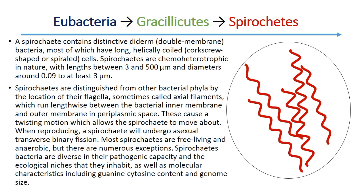You know spirochetes from the previous lecture as a curved-form bacteria. Spirochaeta contains distinctive diderm double-membrane bacteria, most of which have long, helically coiled, corkscrew-shaped or spiraled cells. Spirochetes are chemoheterotrophic in nature, with lengths between 3 and 500 micrometers and diameter around 0.09 to at least 3 micrometers. Spirochetes are distinguished from other bacterial phyla by the location of their flagella, sometimes called axial filaments, which run lengthwise between the bacterial inner membrane and outer membrane in the periplasmic space. This causes a twisting motion which allows the spirochete to move about.